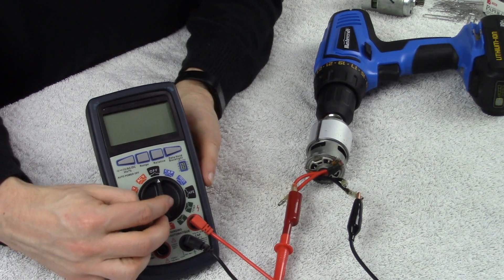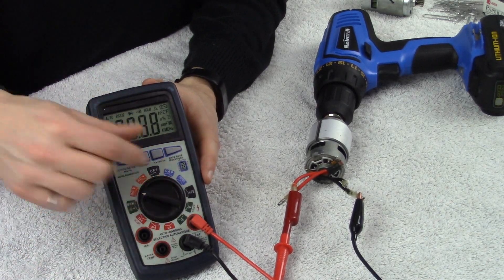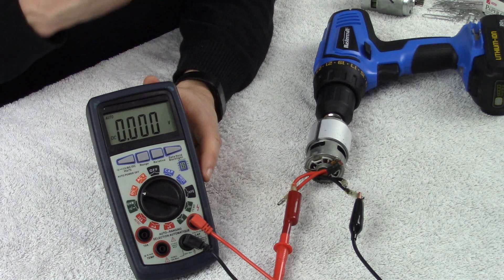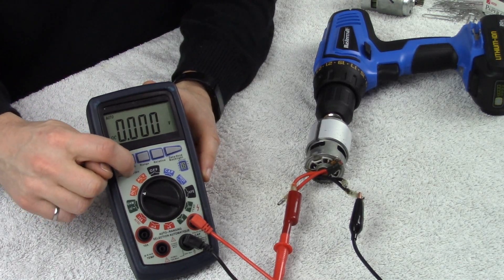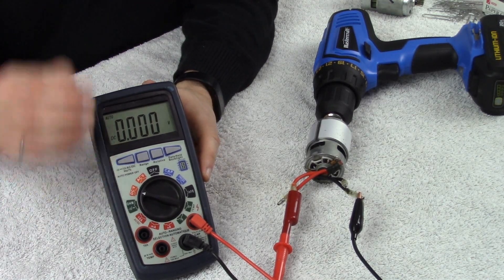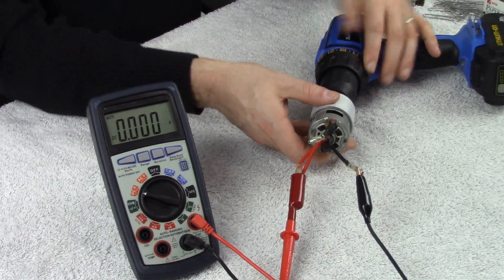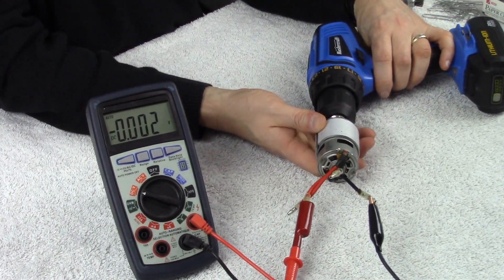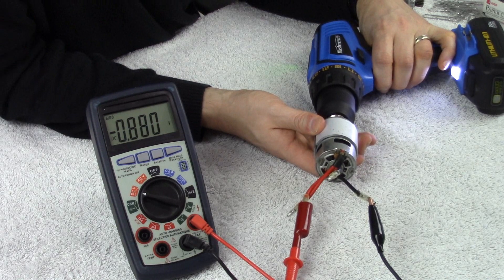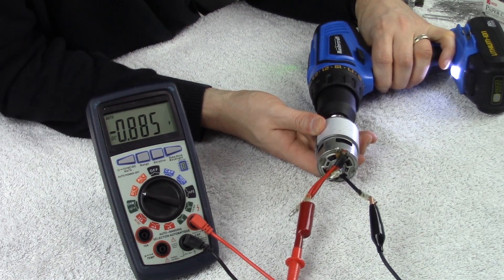From there, the last thing we do here is set up our multimeter to read DC voltage. This is the biggest difference from measuring a brushless motor, which requires AC voltage when you're figuring out KV, versus our brush motor here. We need to be set at DCV, DC voltage. From here, the next thing I can do is fire up this motor with the drill and see what kind of values we're measuring. There you go, we're measuring about 0.88 volts. Now the big thing that we don't yet have is RPM. We need to know the RPM of this motor, what we're spinning it at.